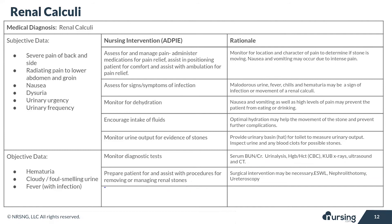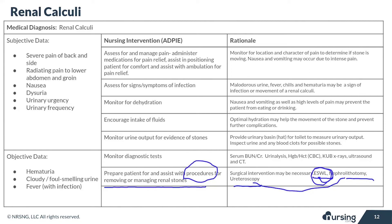If the patient isn't able to pass the stone on their own with increased hydration, they may need surgery or a procedure to remove it. Common procedures include ESWL — extracorporeal shockwave lithotripsy — a nephrolithotomy, or a ureteroscopy. ESWL sends shockwaves through the kidneys to break up the stones, and the patient still has to pass those fragments. The two surgical procedures go in and actually remove the stones.